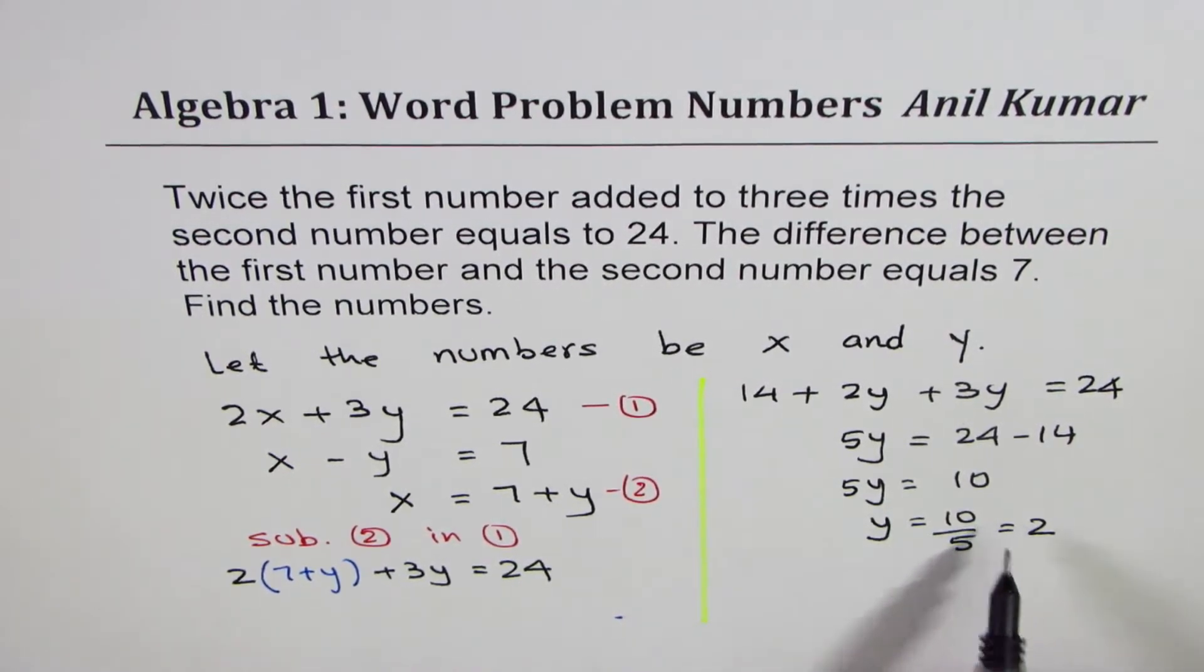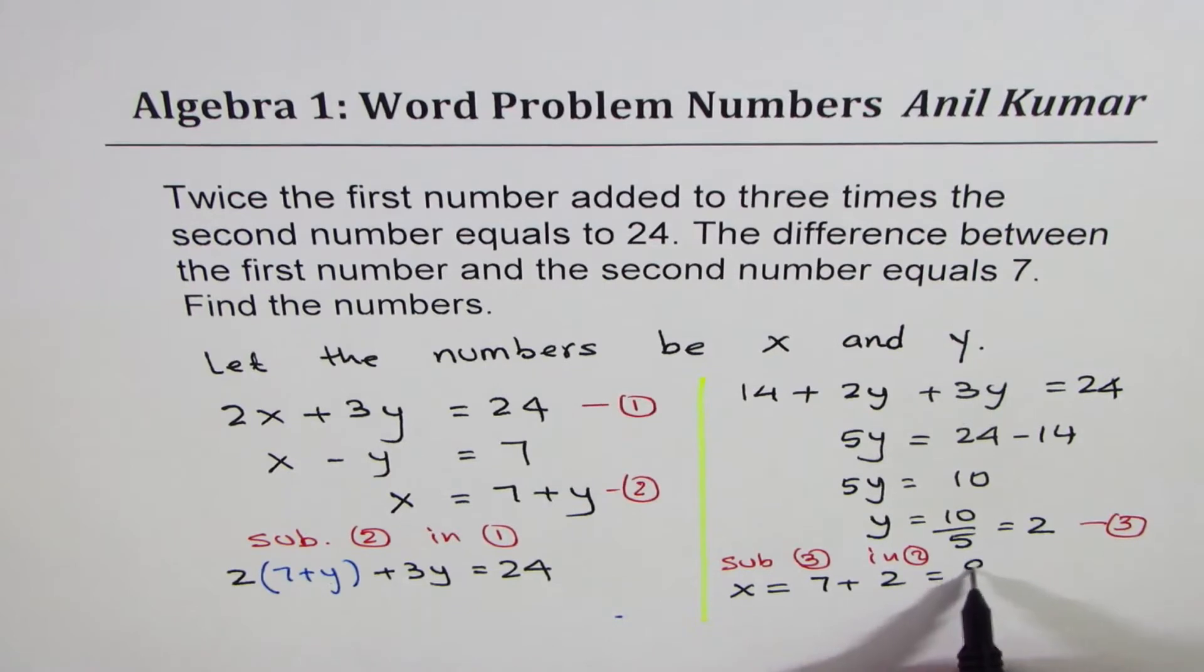Once you get one of the numbers, the other number you can get from equation number two. So let's call this as equation three. Now we will substitute three into two. So that means x is equal to 7 plus 2, which is 9.